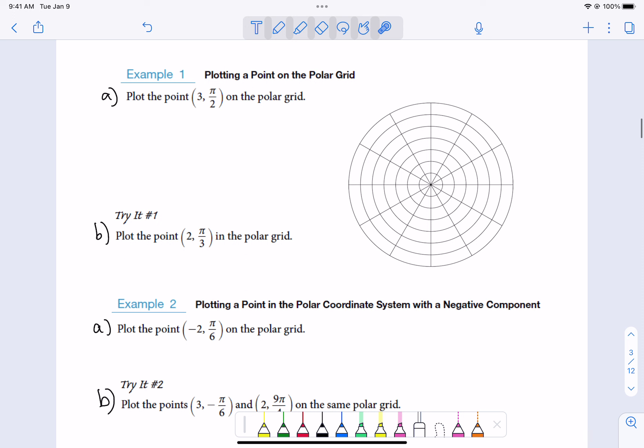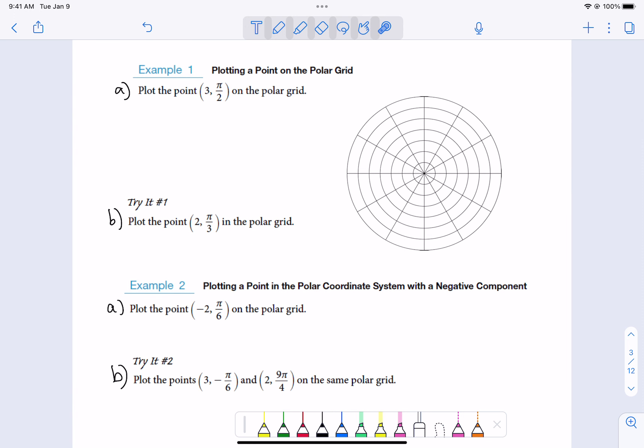Let's practice plotting some of these. We've got four of them here to plot. If the r is 3 and theta is pi over 2, you have to know where pi over 2 is. Here's pi over 2 and we're going to go 1, 2, 3 out from the center. That would be our point. You're going into the pi over 2 direction, 3 out. That's 3 pi over 2.